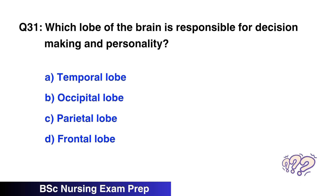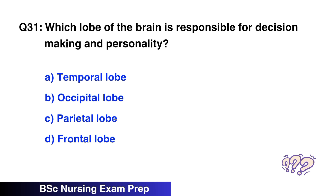Question number 31: Which lobe of the brain is responsible for decision making and personality?